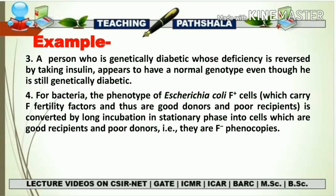So if you have an E. coli F-plus cell — which is F-plus because it has an F factor, also called F fertility factor or F plasmid — and you incubate it for a long time in stationary phase, what happens? The plasmid is cured and lost from the cell. If the F fertility factor is lost, the cell becomes F-minus. So environmental factors like temperature and incubation conditions convert an F-plus cell to an F-minus phenocopy, even though the two are genetically different cells.